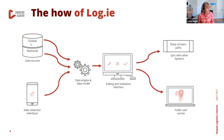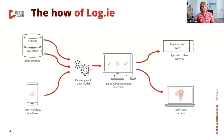How LoCate works: first, we collect information from three different sources — global data sources, national data sources, and surveys and data collection apps that collect data directly from the field. All this information goes, like a funnel, to a data engine that processes and merges everything into our data model. Before information goes public, we have an editing and validation interface where the information is edited and verified — this is where our learning program comes into place.